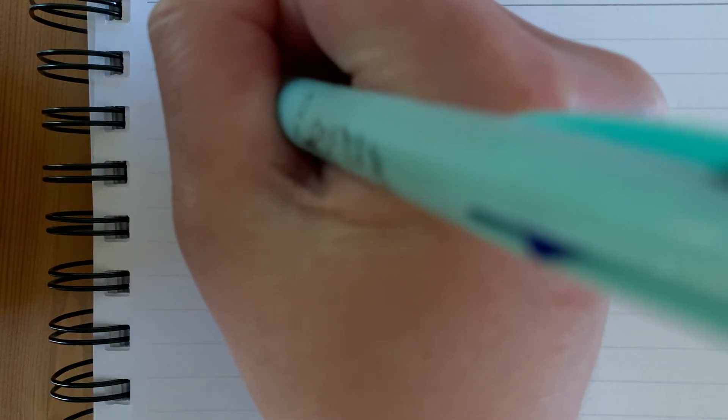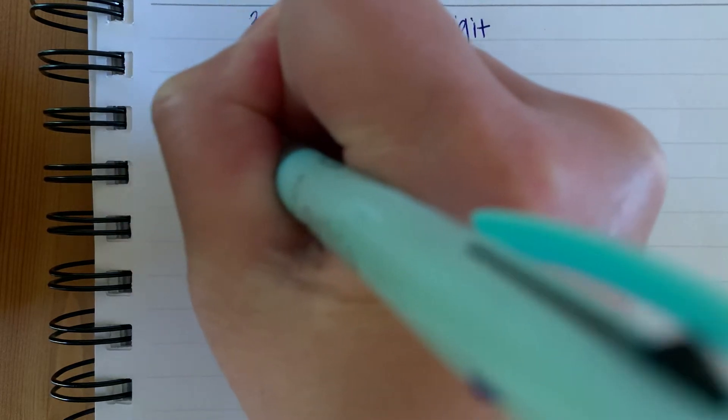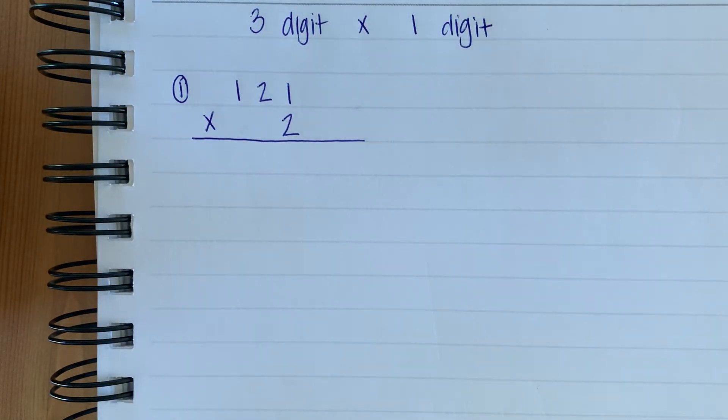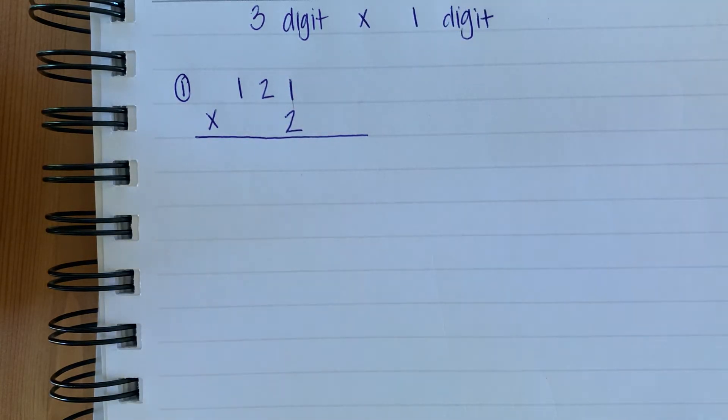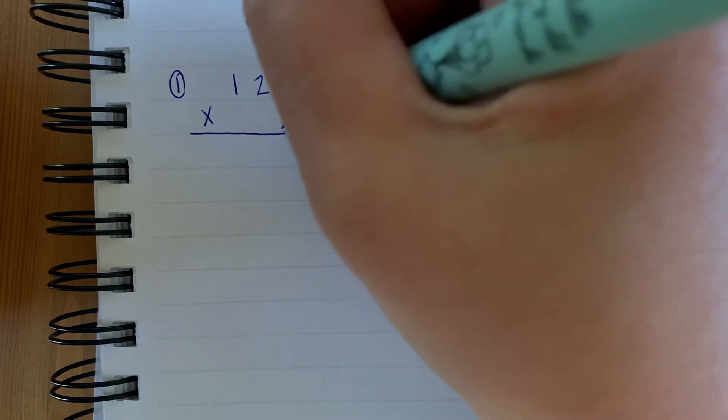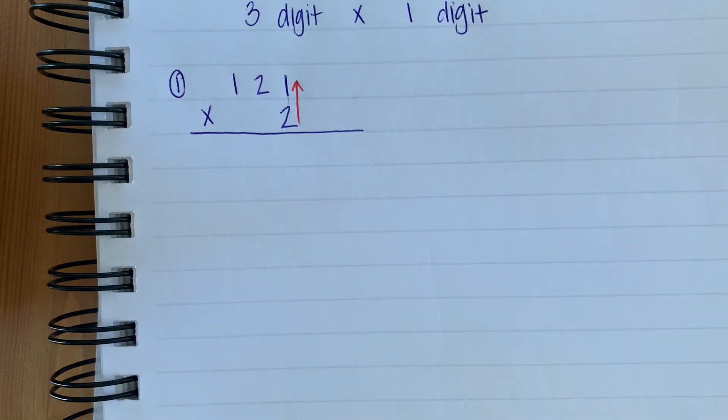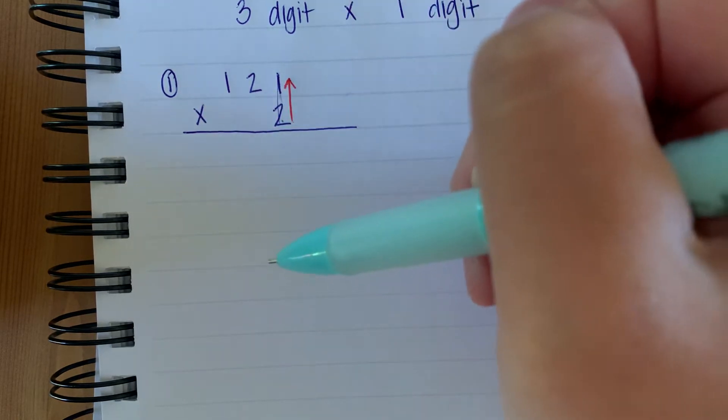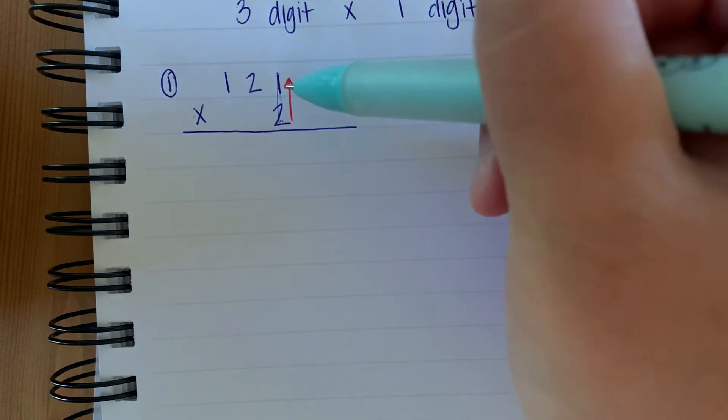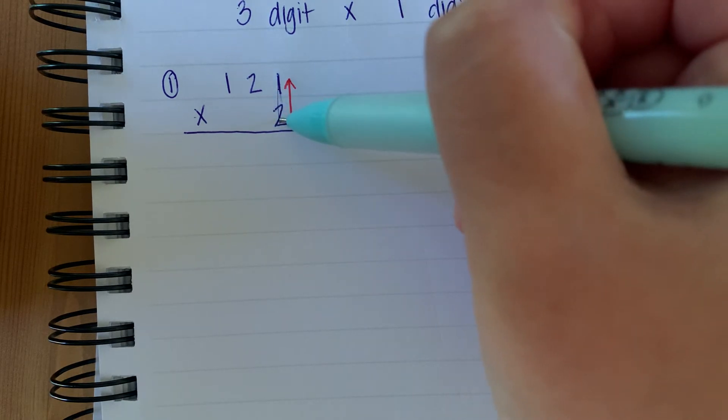Number one, we're going to have 121 times two. Now remember, just like when we're adding or multiplying two digit numbers, you always start in the ones place, which is right here. And what you're going to do is you're going to multiply up first. We go this way. So you can either say one times two or you can say two times one. So one times two is two.